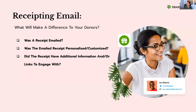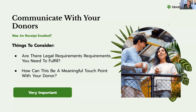Let's talk about the receipt email. Most systems will set this up to run automatically, and a lot of times you can customize and personalize it. If you can't, talk with your provider about how you can get in there and customize things. We also looked at links in the email, like we did with the landing page — is there an opportunity for someone to get the receipt and then also click a link to learn more about volunteering?